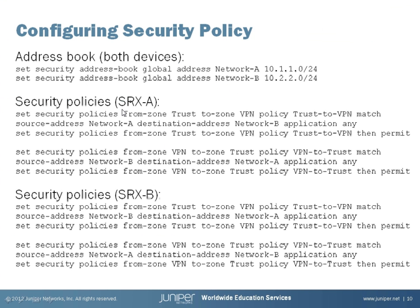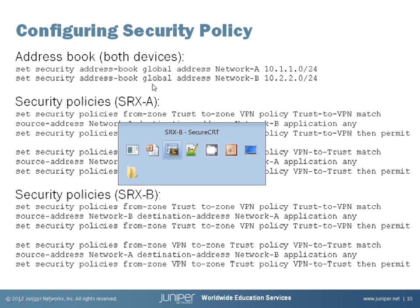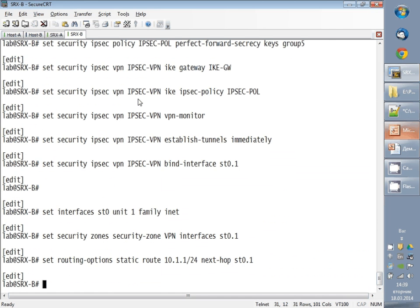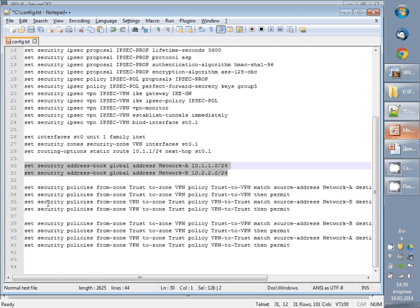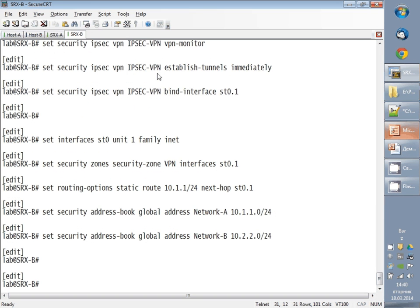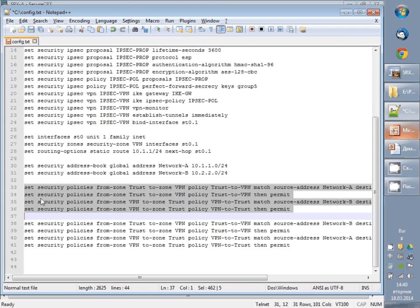The last thing is configuring the security policies. We need policies between the trust zone and VPN zone to allow traffic. For simplicity, we allow all hosts in Network A to communicate with all hosts in Network B in both directions. We configure a global address book with entries for Network A and Network B, and then configure policies from trust to VPN and from VPN to trust on both devices.